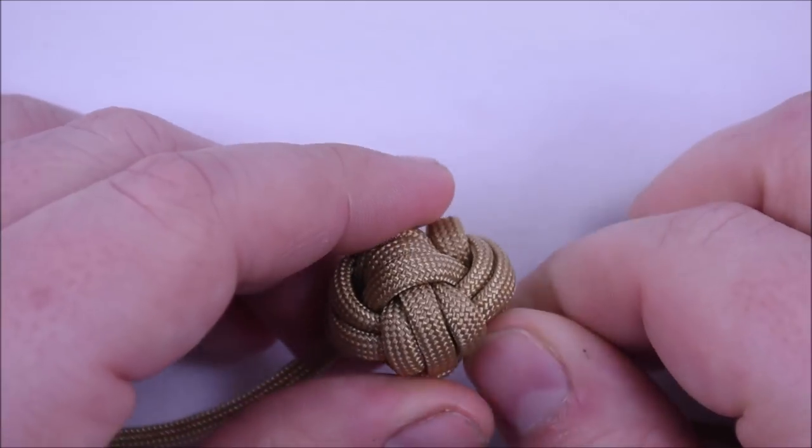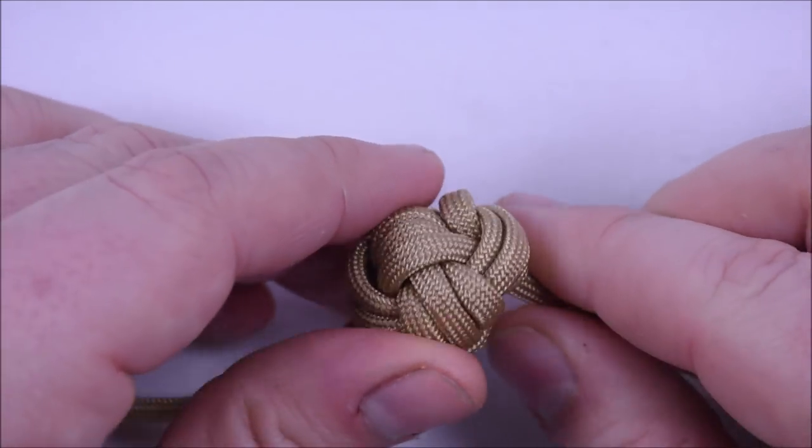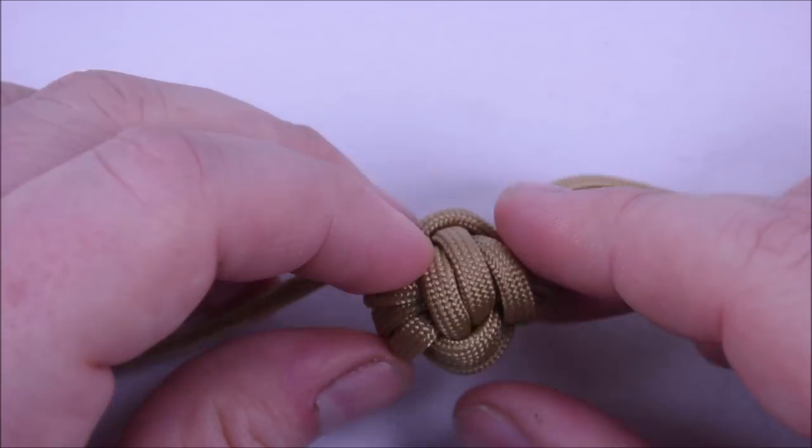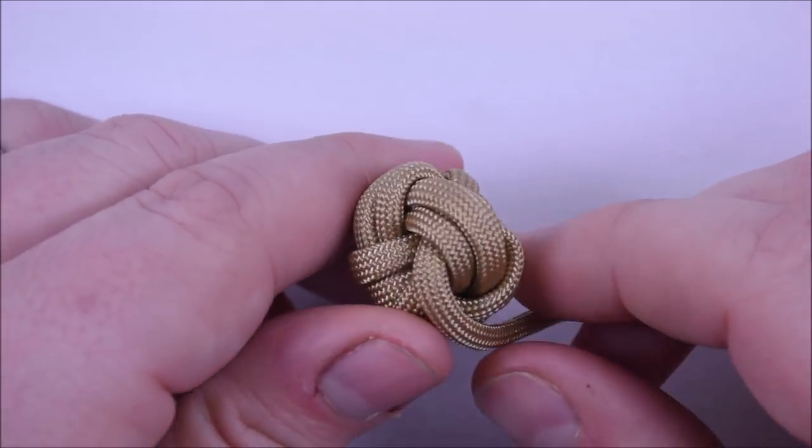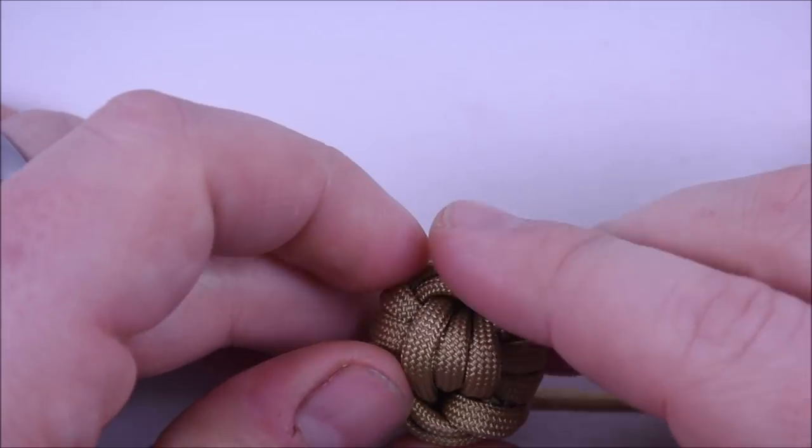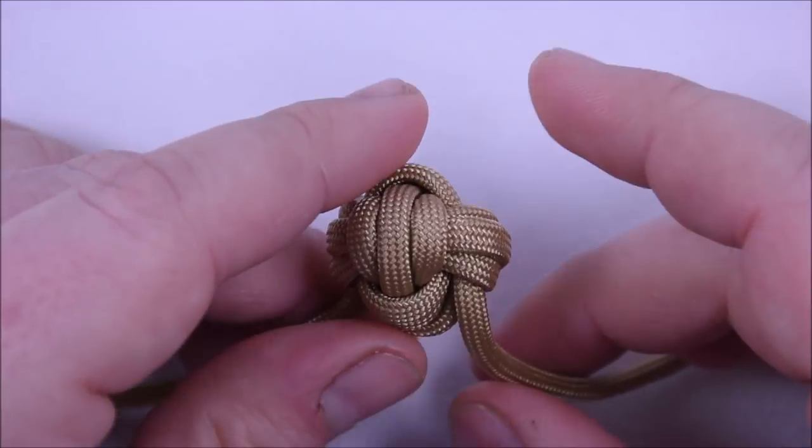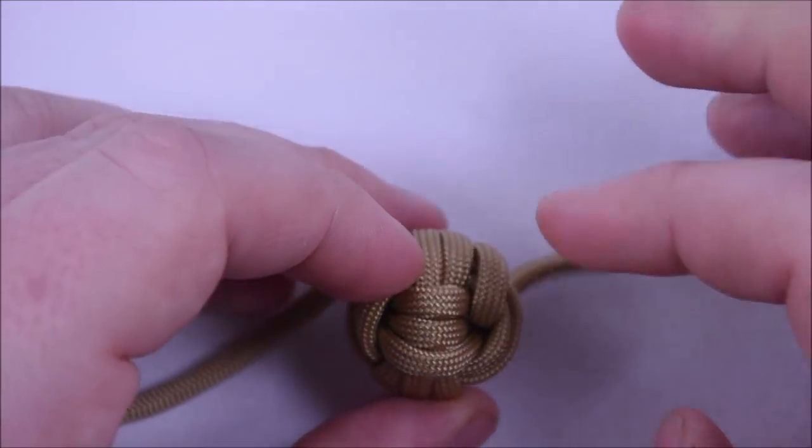So I'm going to name this 'how to make a,' or well, I don't know what I'm going to call it, probably a monkey fist jig, how to do and not to do this. Yeah, basically don't over-tighten it because you can definitely mess this up by pulling too tight or going further than you think you need to.